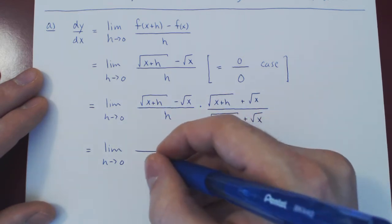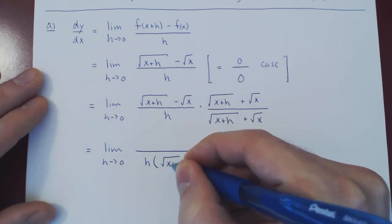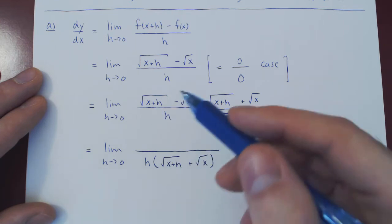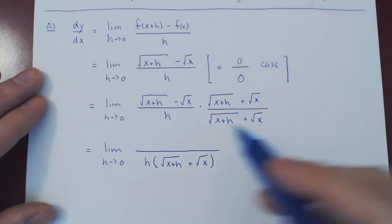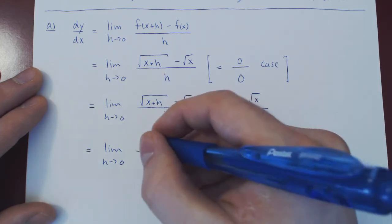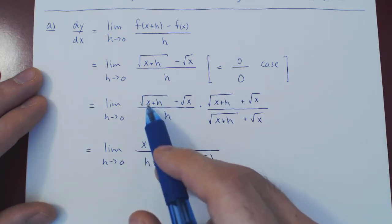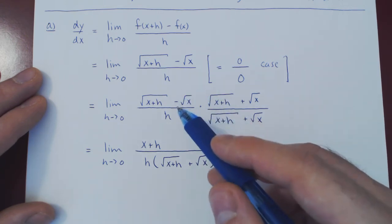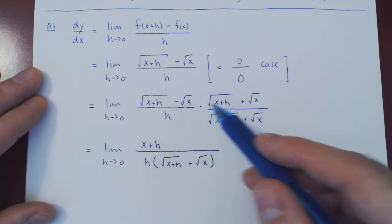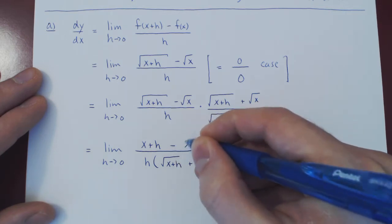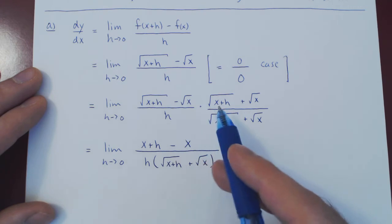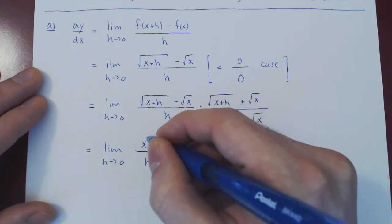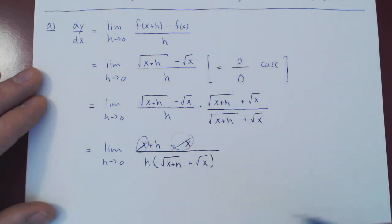On our denominator we have h times the square root of x plus h, plus the square root of x. Now look at the numerator. Root of x plus h times itself is just x plus h. Then root of x plus h times root of x, and minus root of x times root of x plus h — both of these cancel. Finally, minus root of x times root of x gives us minus x. The square roots have disappeared from the numerator, as always happens when you multiply a term with its conjugate. We can cancel the two x's — x minus x is 0 — and now we're left with something quite simple.